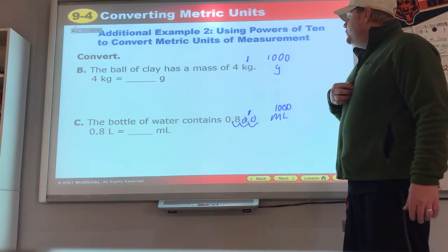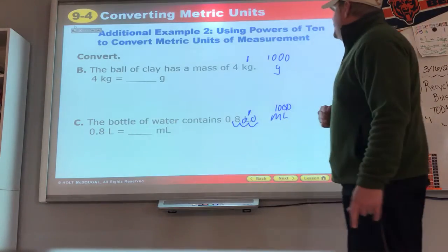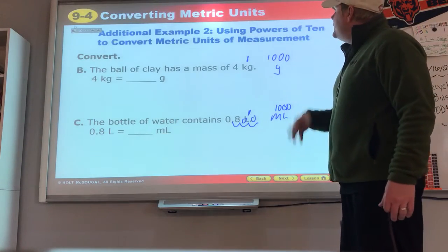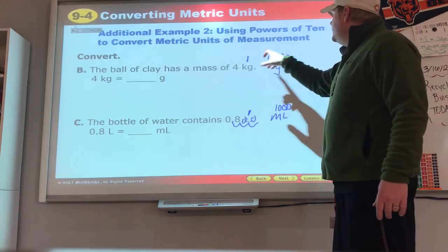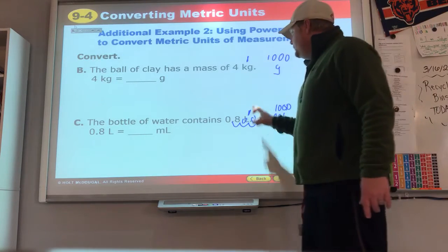The ball of clay has a mass of four kilograms. They want to go to grams. Going from big to small means we multiply. Four times the 1,000, four times 1,000 hopefully you can understand is 4,000 grams.